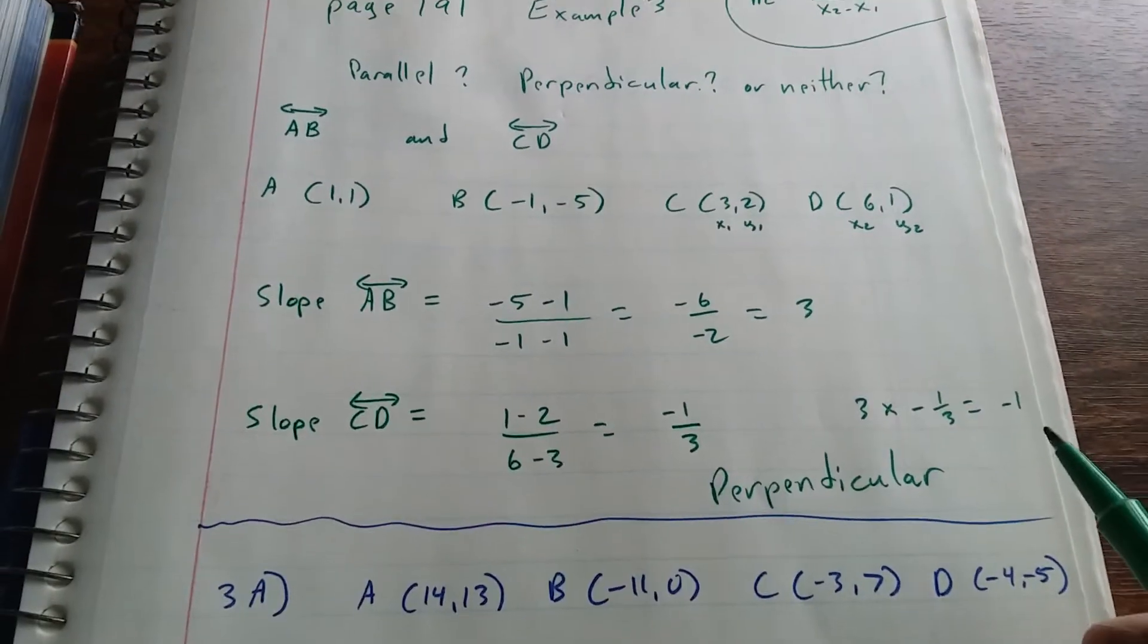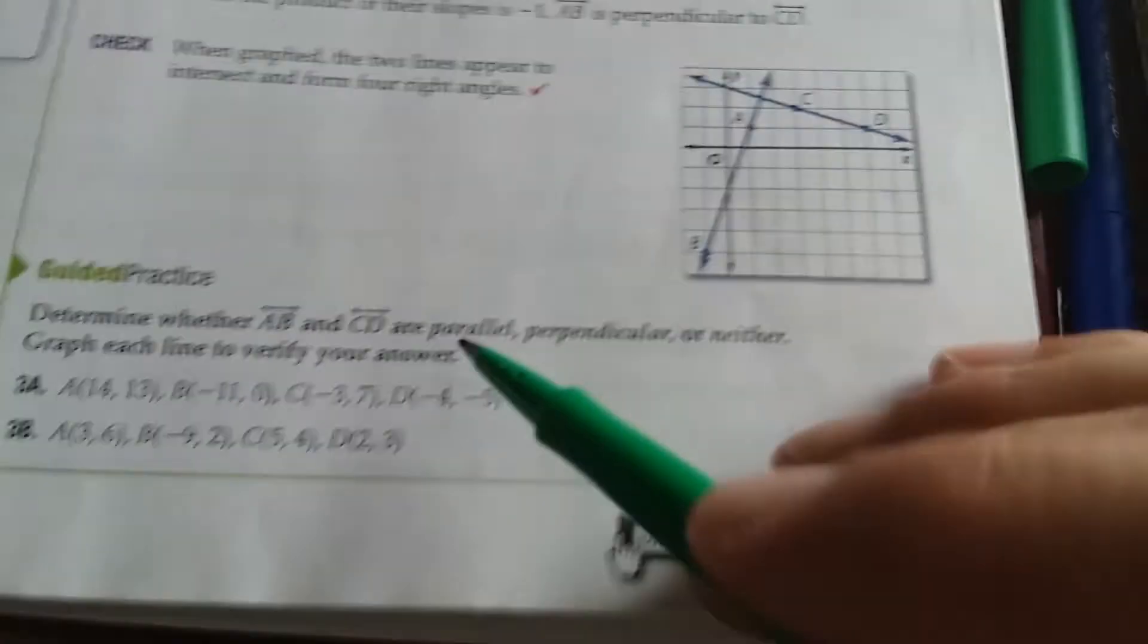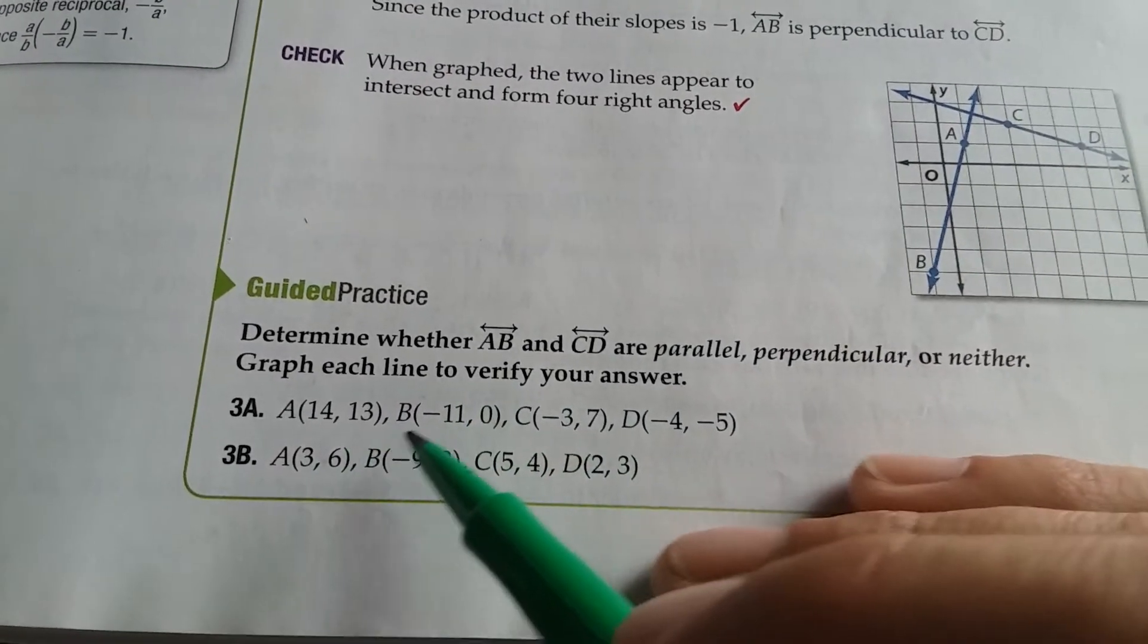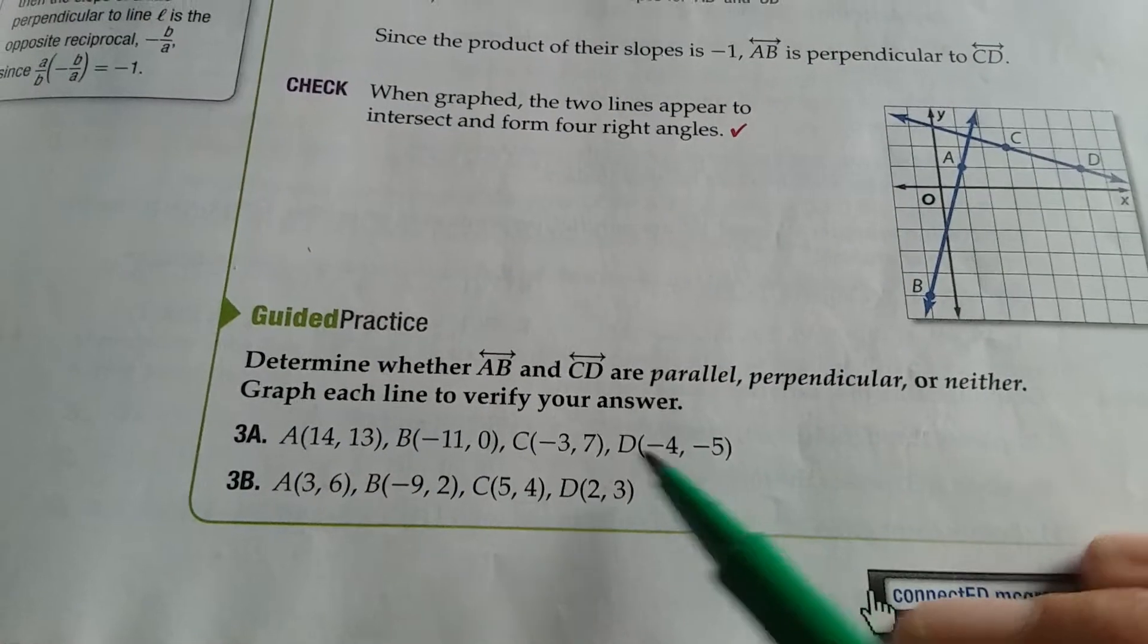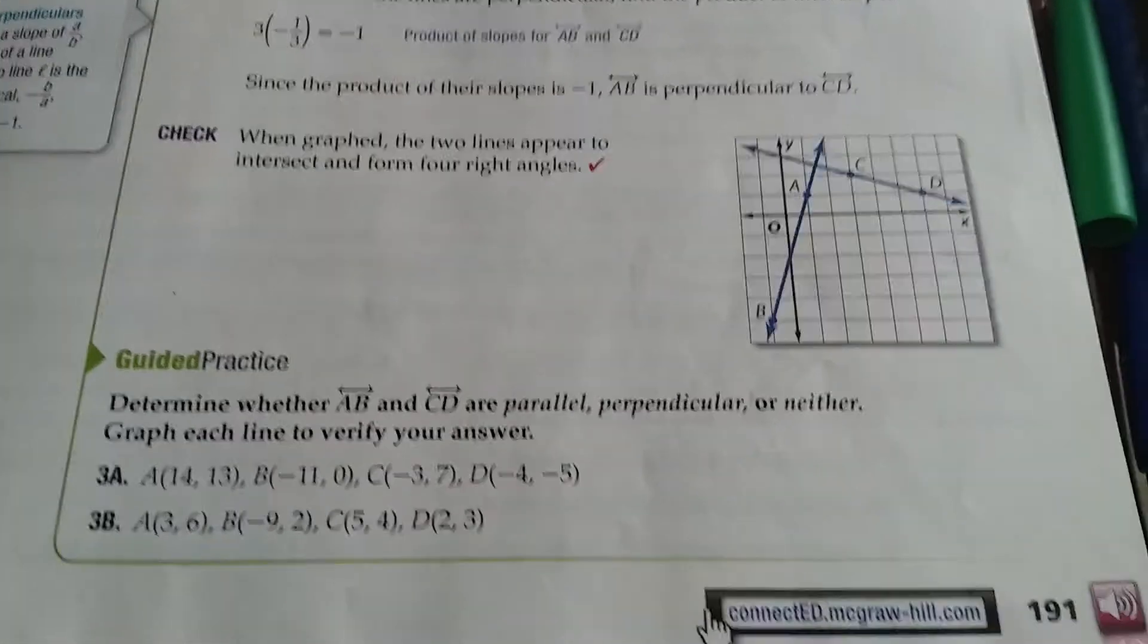Okay, why don't you go ahead and do 3A and 3B out of the book. Make sure you copy the numbers down correctly. It's a common mistake just to miss a negative sign.